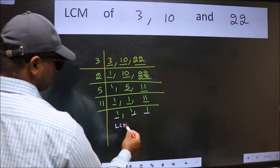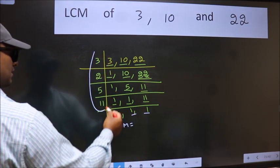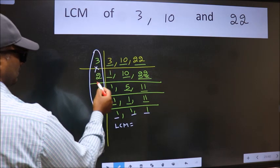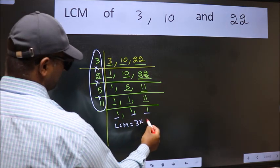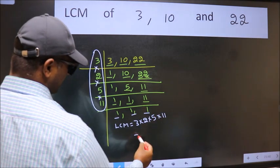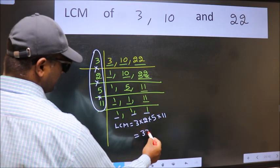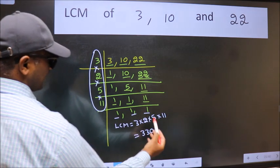So our LCM is the product of these numbers: 3 times 2 times 5 times 11. When we multiply these numbers, we get 330 as our LCM.